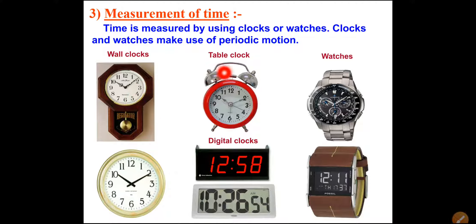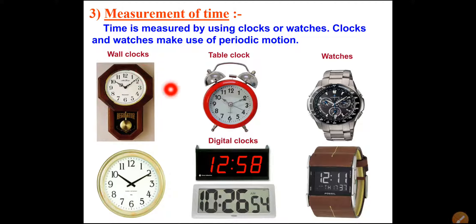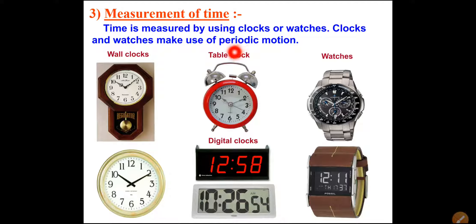Here you can see different types of instruments used to measure time. Time is measured by using clocks or watches, and clocks and watches make use of periodic motion. Shown here are a pendulum wall clock, a table clock, watches, a digital wall clock, and a wristwatch. All these instruments show the time - we can measure time with their help. These watches and clocks make use of periodic motion, meaning after some period the clock shows the same time.